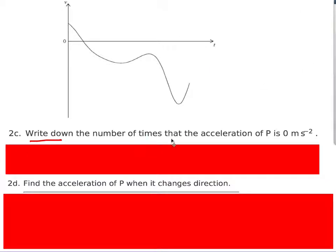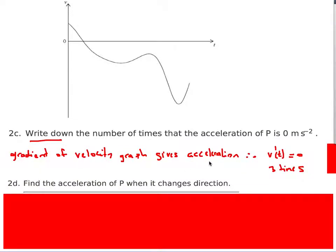Write down the number of times acceleration is zero. When the question says 'write down,' it should be a quick answer. Acceleration is the gradient of the velocity graph, so we need to count how many times the gradient of the velocity graph is zero — i.e., at the turning points. There are three such points, so the acceleration is zero three times.